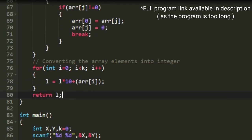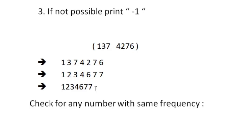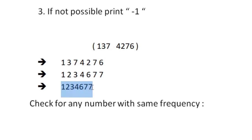Back in the main function, the smallest possible integer formed from the digits of x and y is stored in long integer l. Now our task is to find the smallest possible even integer with the same digit frequency as l. To do that, we run an infinite loop starting from l, incrementing by one each iteration, checking whether the number is even and has the same digit frequency.